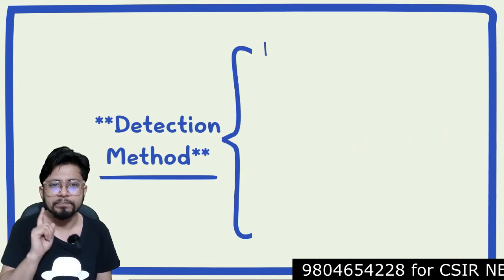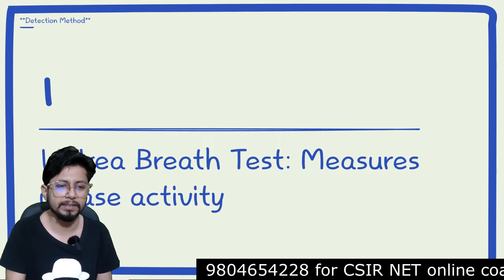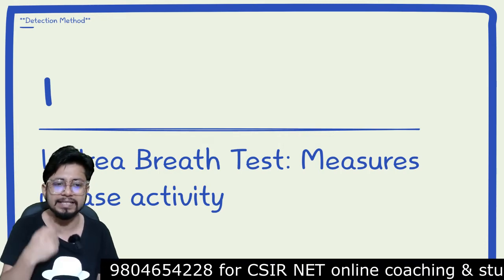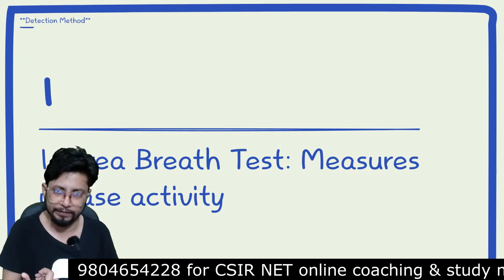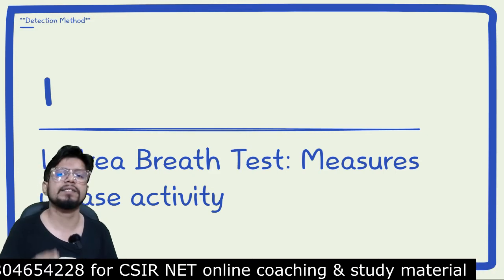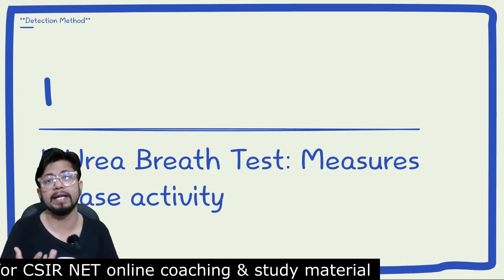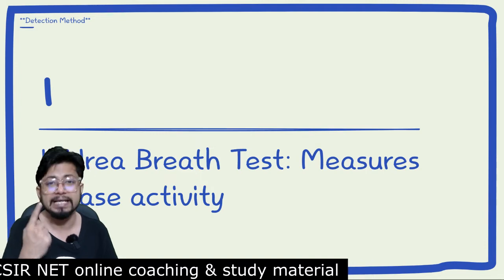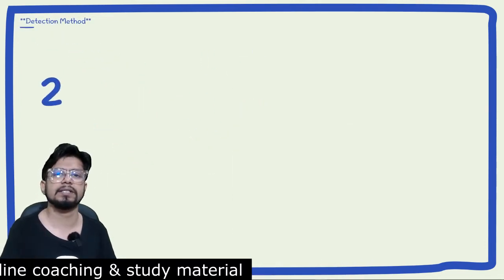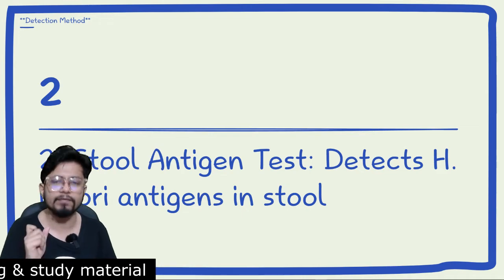There are four detection methods for Helicobacter pylori. The first is the urea breath test, which measures urease activity in the body. A positive urea breath test indicates the presence of urease produced in the stomach by Helicobacter pylori, serving as a confirmation.